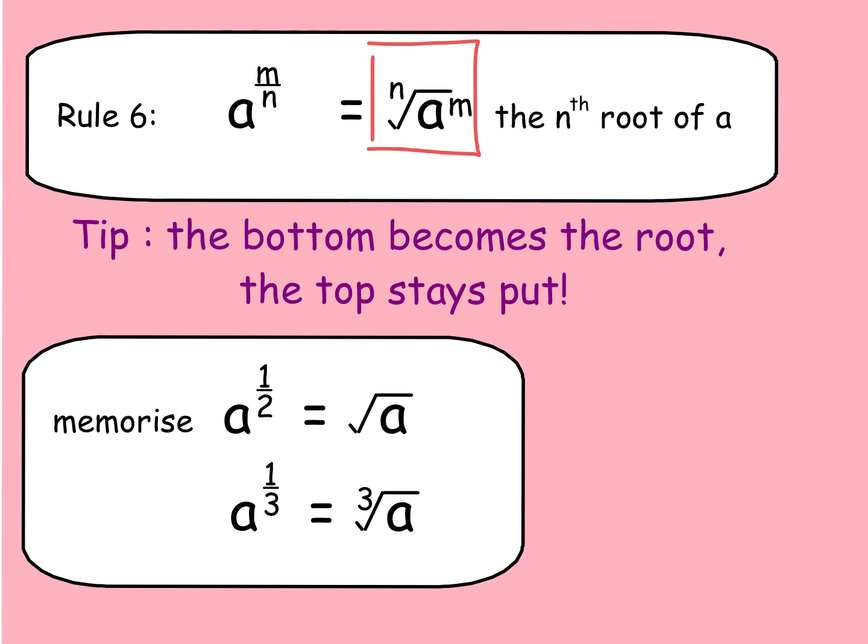Other teachers use things like if you think of a fraction as being m over n, think of this as the top and this as the trousers. And some teachers will say take the trousers off. It's the trousers that come off first. Whatever works for you. But basically, that m is staying stationary. That is going nowhere. It's the bottom that's moving off. So I like my wee rhyme about the bottom becomes the root. The top stays put.